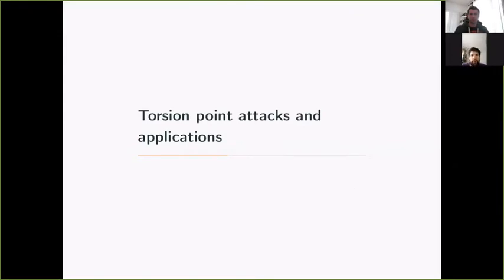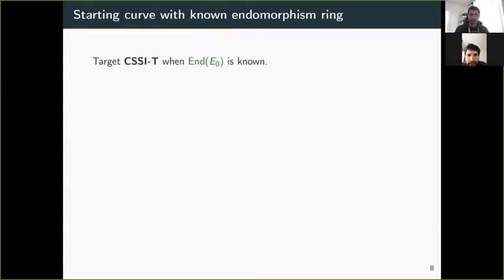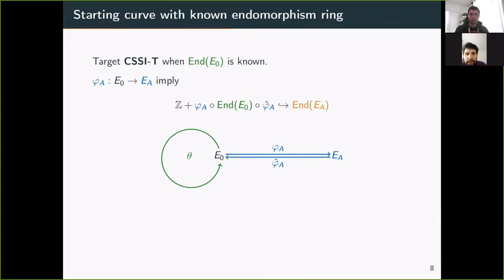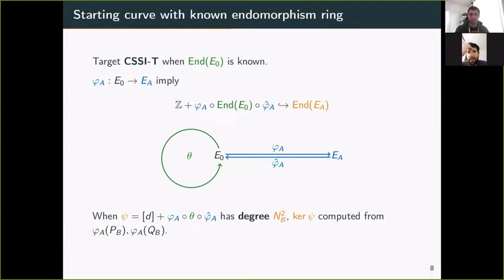Now I'll briefly recall what torsion point attacks are. For torsion point attacks, you want to solve the CSSI problem where the endomorphism ring of E₀ is known, exploiting this fact meaningfully. The main idea is: one is looking for an isogeny φA between E₀ and EA, then look at specific types of endomorphisms of the target curve EA, which are also of form d + φA θ φ̂A.